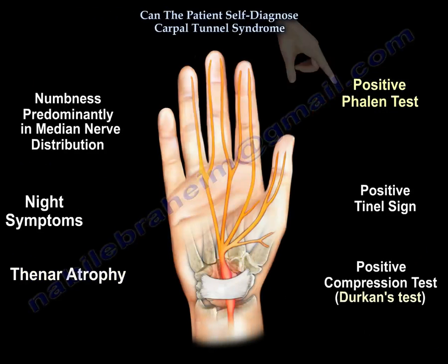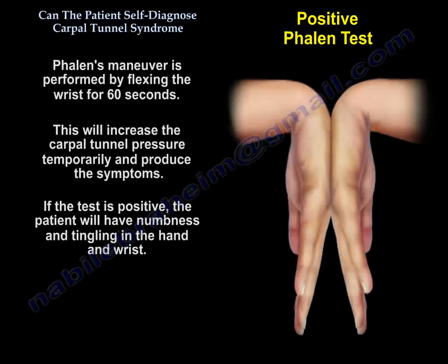The Phalen's Test is performed by flexing the wrist for 60 seconds. This will temporarily increase the Carpal Tunnel pressure. If the test is positive, the patient will have numbness and tingling in the hand and wrist.